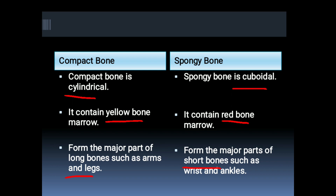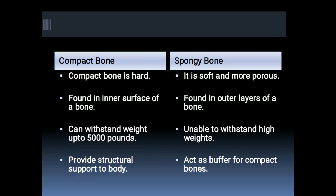Compact bone is hard while spongy bone is soft and more porous. Compact bone is found in the inner surface of a bone while spongy bone is found in the outer layers of the bone.